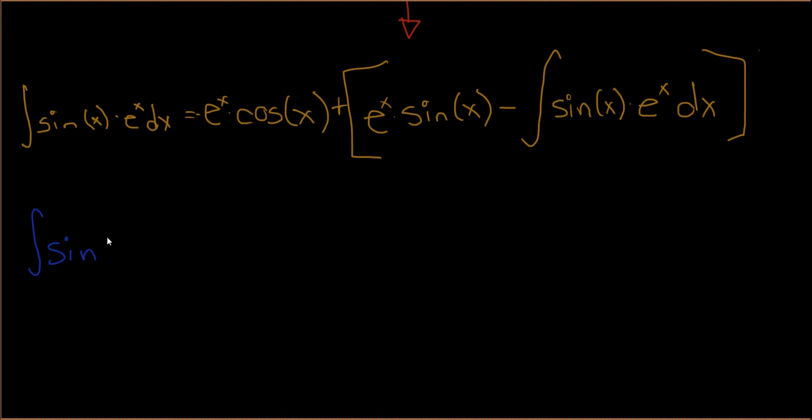Integral of sine of x - I'll write it faster - e to the x dx equals negative e to the x cosine x. Now distributing that plus sign, plus e to the x sine x minus, because when you distribute that plus to minus, it stays minus, integral of sine x times e to the x dx.